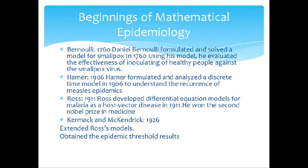Hammer formulated and analyzed a discrete model in 1906 to understand the recurrence of measles epidemics. Ross, 1911, developed the Ross-Renshaw Equation Models for Malaria as a Host-Vector Disease. He won the second Nobel Prize in Medicine.